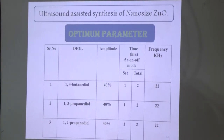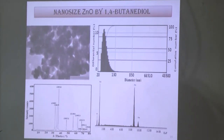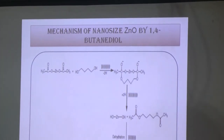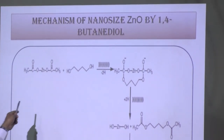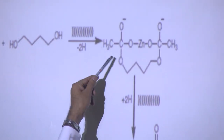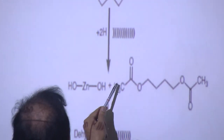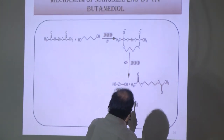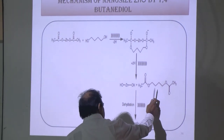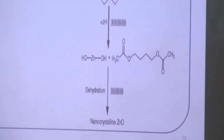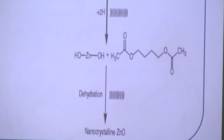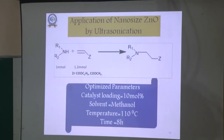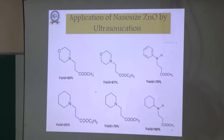Different solvents give different sizes and shapes of zinc oxide. The reaction mechanism was established: zinc acetate forms a complex with the diol, sonication promotes hydrolysis to zinc hydroxide and acetate, and dehydration under sonication gives nano-sized zinc oxide — confirmed by GC-MS spectroscopy. We used this zinc oxide for three-component coupling amination reactions and prepared various substrates.